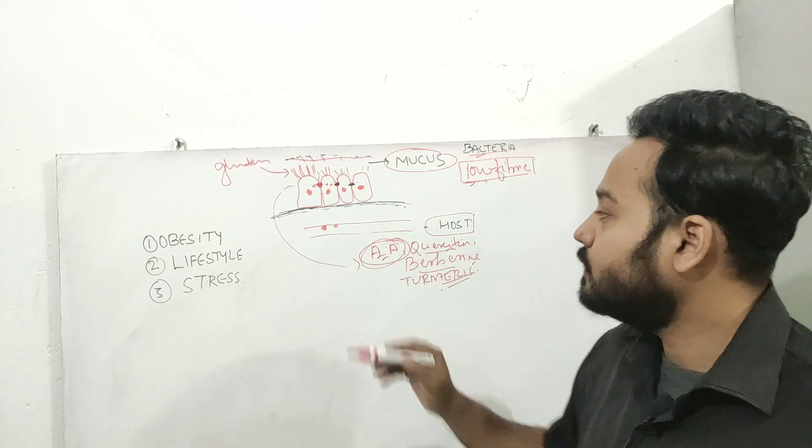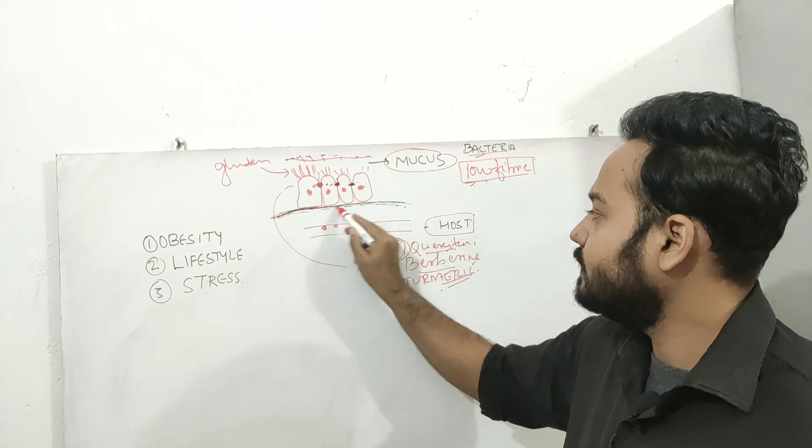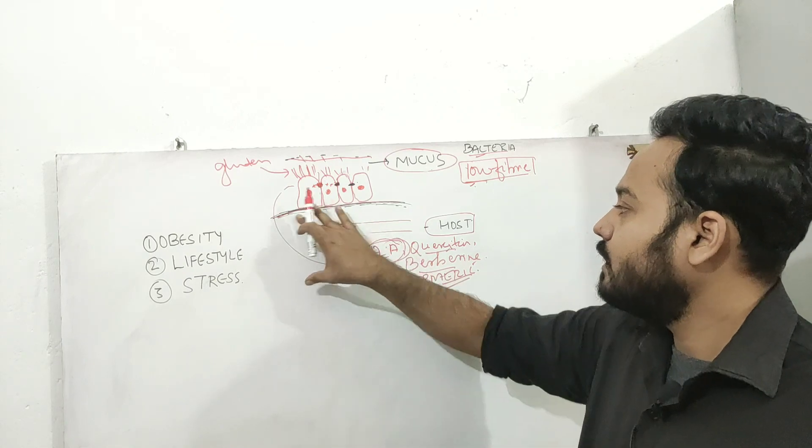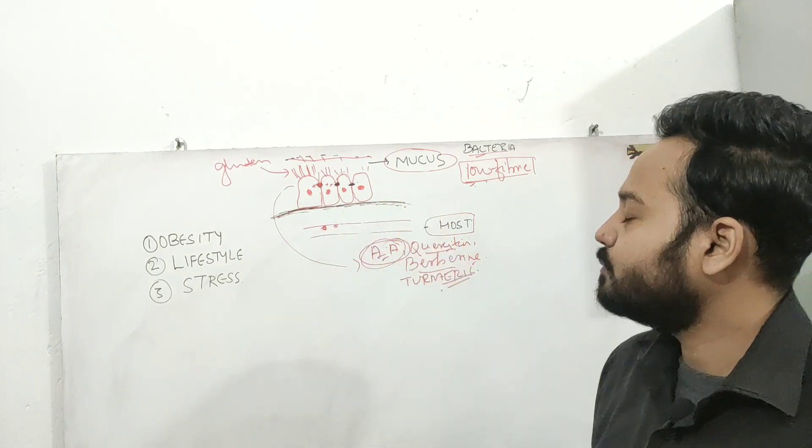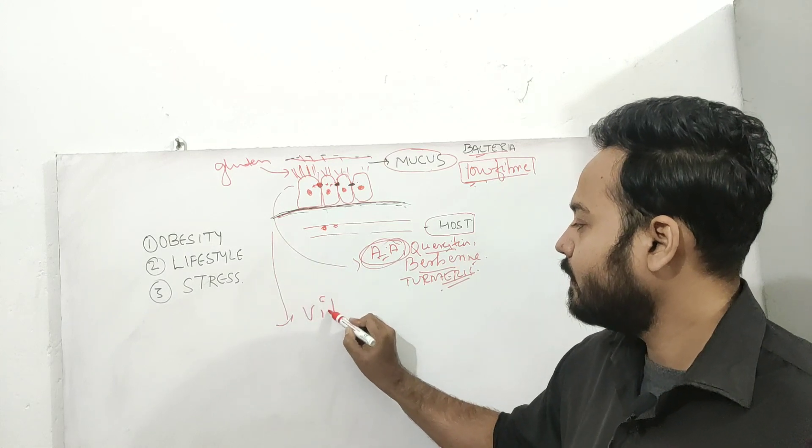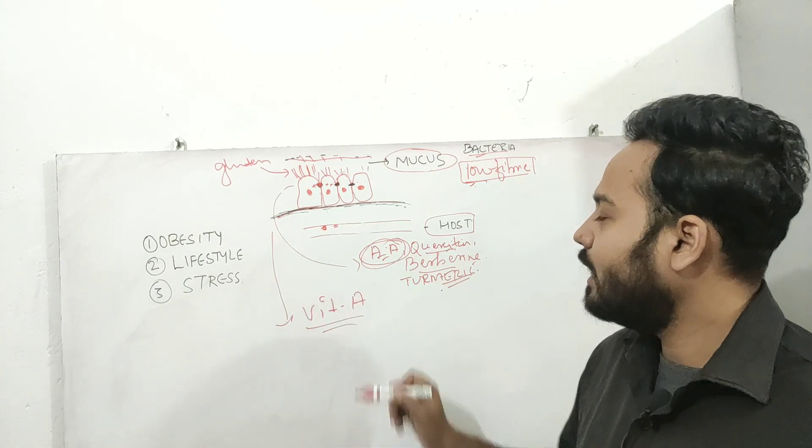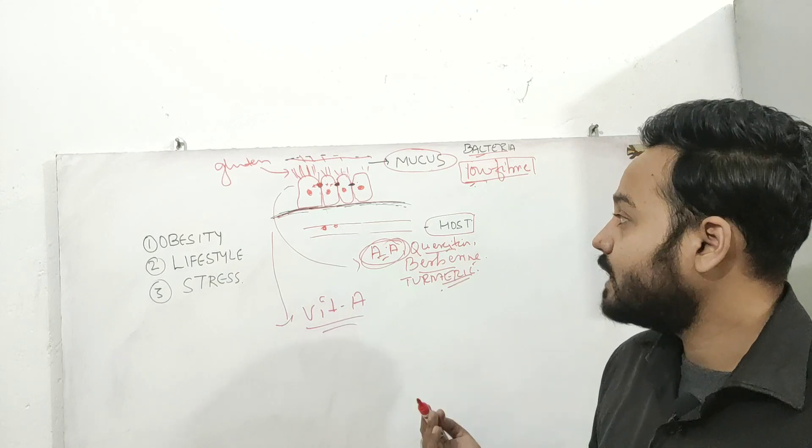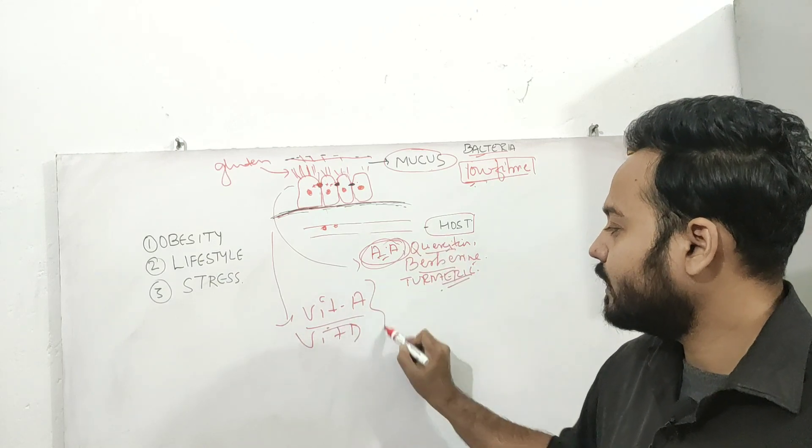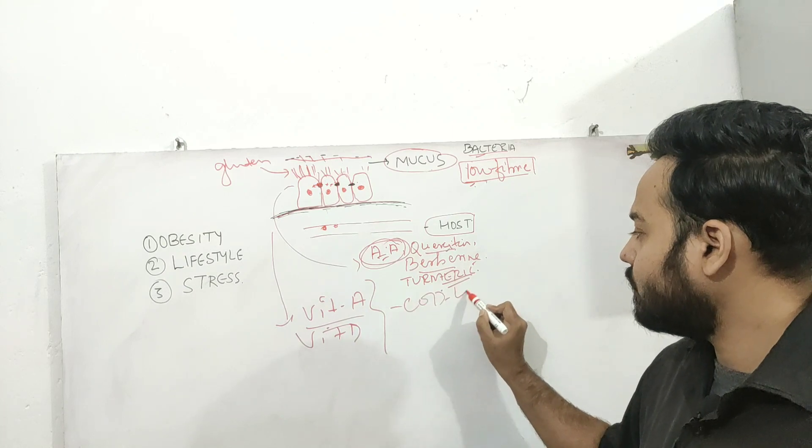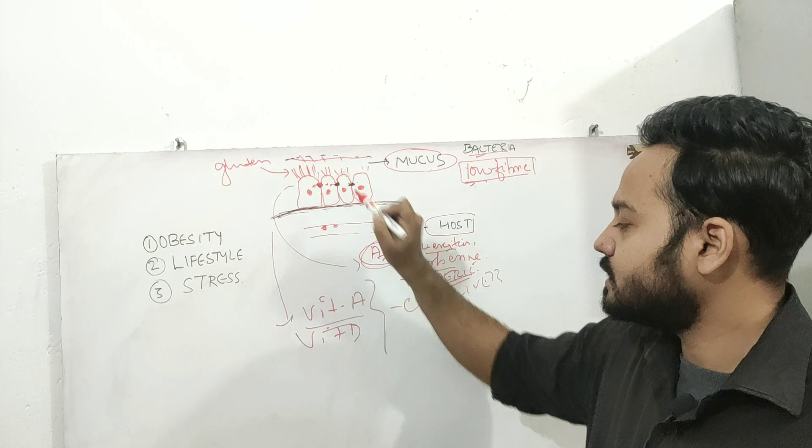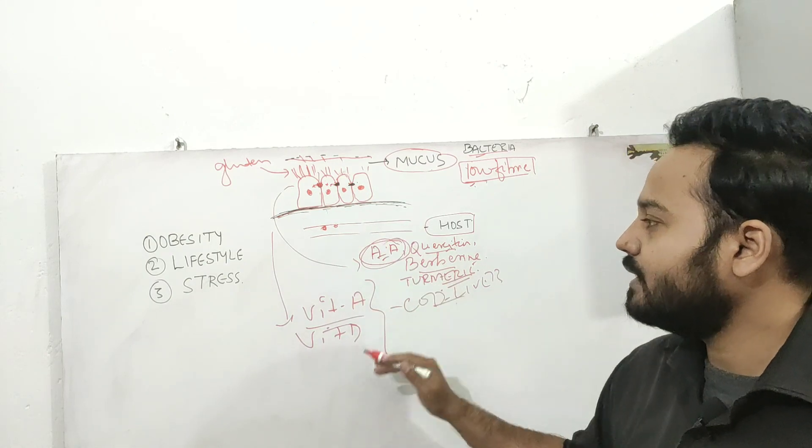Now there is intestinal epithelium. So to maintain the integrity of intestinal epithelium, what you need is vitamin A. And to increase the formation of tight junctions, what you need? You need vitamin D. So you can take cod liver oil for proper functioning of these tight junctions. Vitamin A and vitamin D.